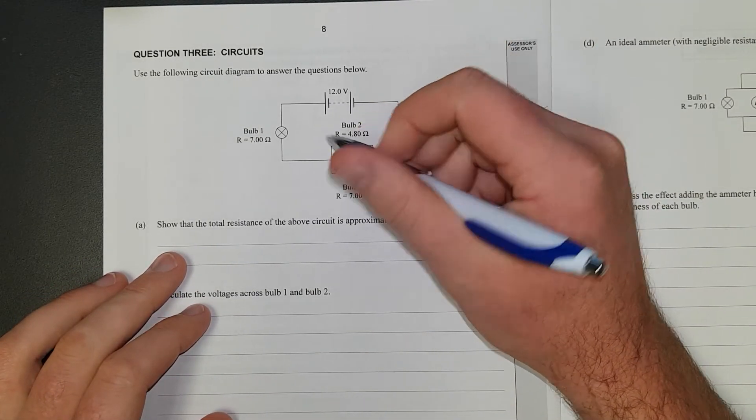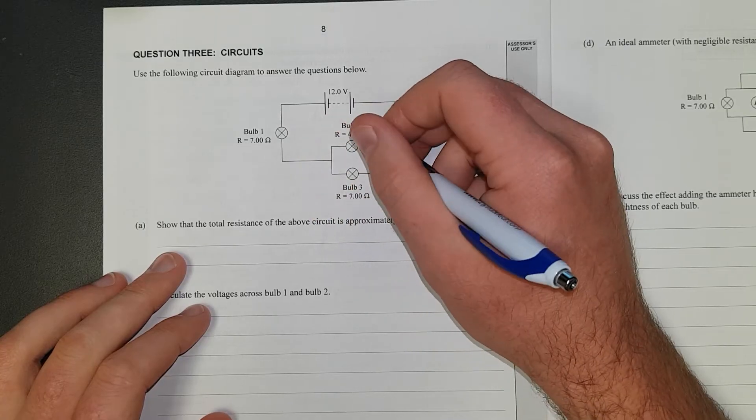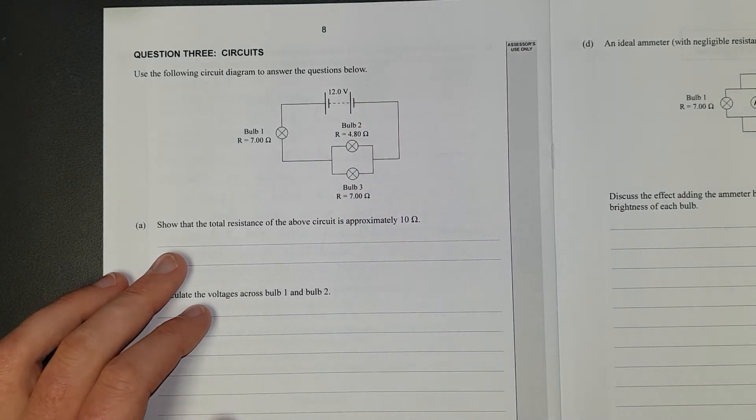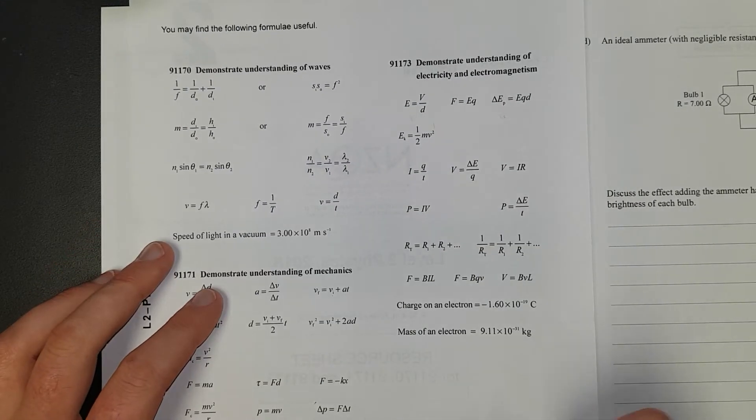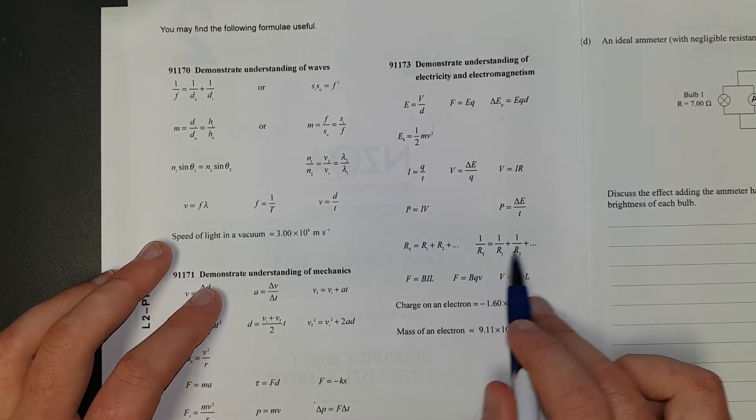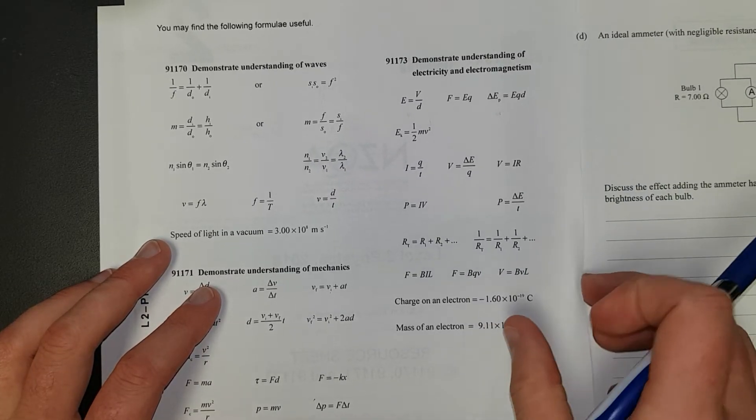Right, so we have these two fellows in parallel and then in series. We add the two guys in parallel. This is for adding resistors in parallel, and that's for adding resistors in series.